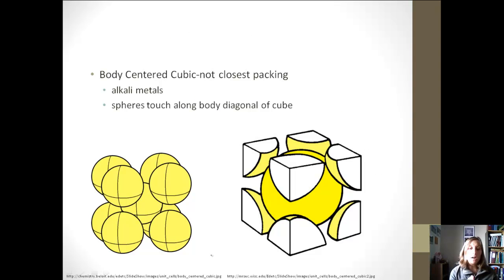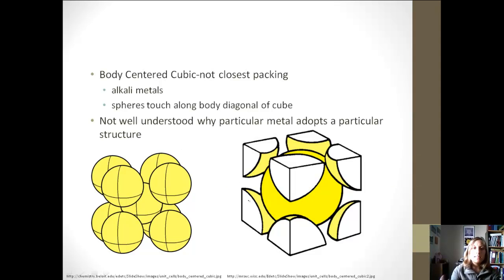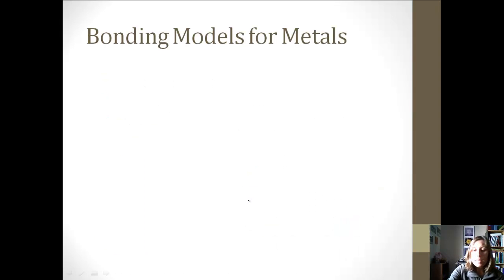We also have this third organization, and they are not the closest packing. This is called body-centered cubic. It's called this because we have one full atom in the center, and so it's body-centered. And so then we have these spheres along the diagonal of the cube they will all touch. Alkali metals will usually form this type of structure, and it's not really well understood why a particular metal adopts a particular structure.